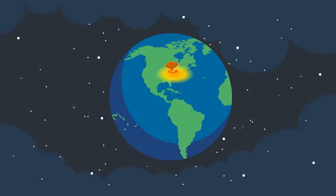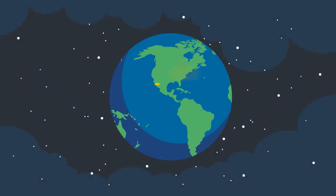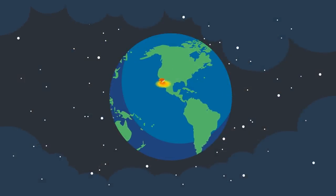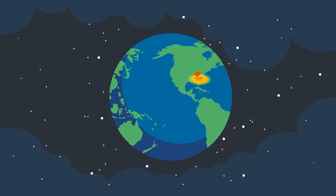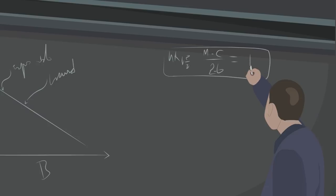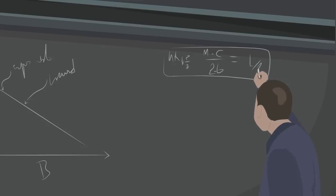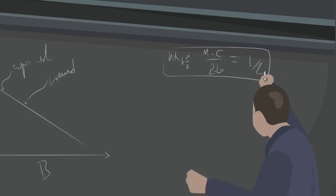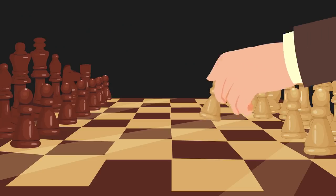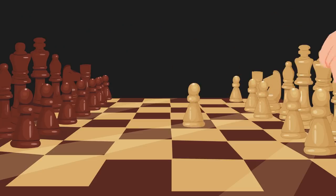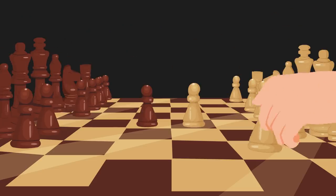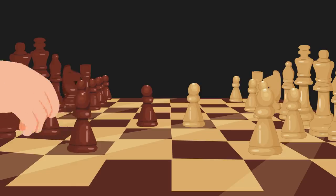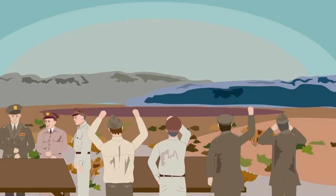Another way to explain how the policy of MAD assures a tentative global nuclear peace is using Nash's Equilibrium. Nash Equilibrium proposes that in a game where each player knows the other's strategy, there is no benefit to changing your own. And that's where we find ourselves today, in a world where eight or possibly nine countries are capable of destroying the planet through nuclear war.